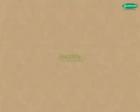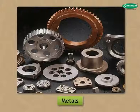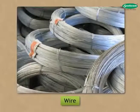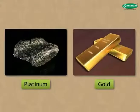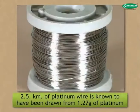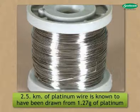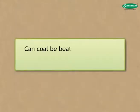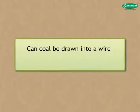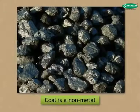Ductility is the property of metals. It is the ability of a material to be drawn into a wire. Platinum and gold are well-known highly ductile metals. 2.5 km of platinum wire is known to have been drawn from 1.27 grams of platinum. Can coal be beaten into a sheet? No. Can coal be drawn into a wire? No. Coal is a non-metal.